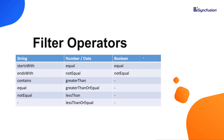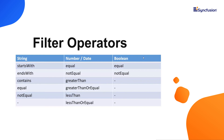Now let me list out the filter operators supported on each tree grid column. The working of the operators mainly relies on the data types of the column values. If the column includes string values, you can use operators like startsWith, endsWith, contains, equal, and notEqual. If the data type is either number or date, you can use equal, notEqual, greaterThan, greaterThanOrEqual, lessThan, and lessThanOrEqual.